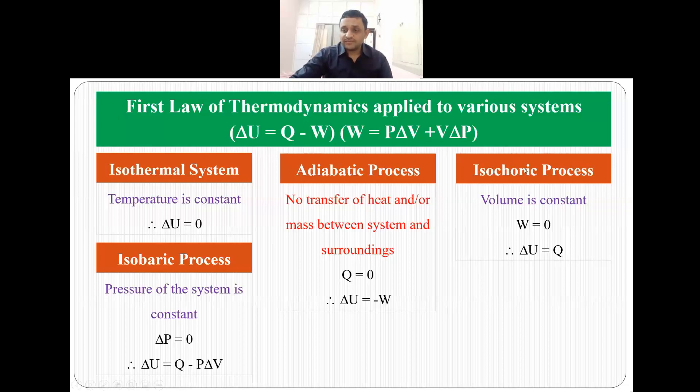In isochoric process volume is constant and since volume is constant the network done by the system is zero and that is why delta U is equal to the amount of heat which we are supplying. So this is how the first law of thermodynamics is applied to various systems.